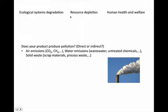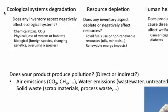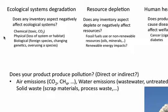When we're thinking about ecological systems degradation, this is really looking at whether the inventory aspect negatively affects ecological systems. Here we can think about chemicals produced, if they're toxic chemicals or CO2. We can also think about some sort of physical loss of system or habitat — if some aspect of the product actually removes land, this would count.